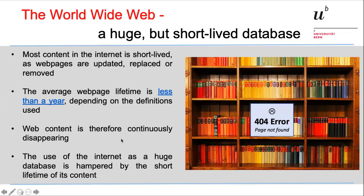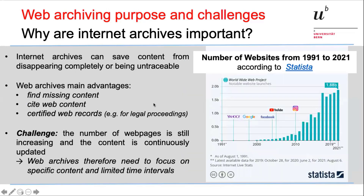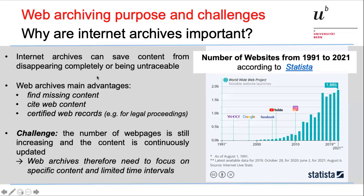Therefore, web content is continuously disappearing, and this makes it difficult to use the internet as the huge database that it actually is. The aim of web archives is to solve this problem. Due to the short-lived nature of web pages, archives are very important, and their main function is to help find untraceable content — either because the website has completely disappeared, is under a different URL, or because content has disappeared due to updating.